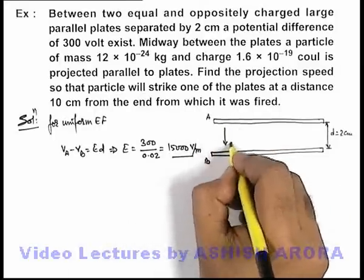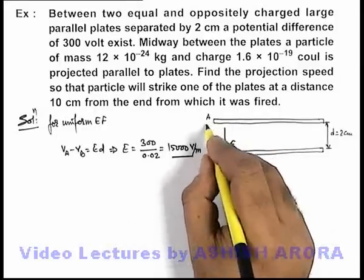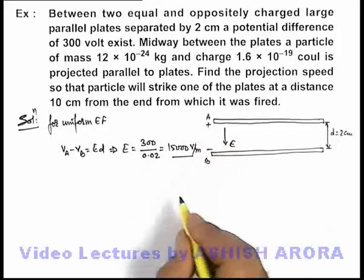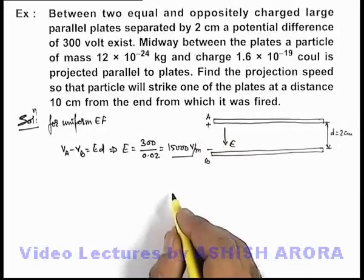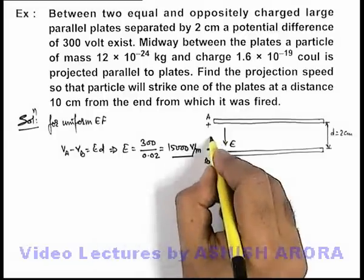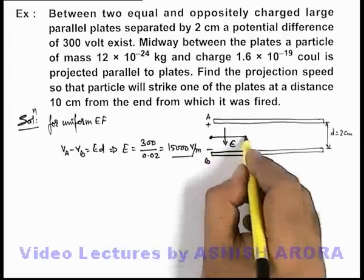From plate A to B, if A is taken at higher potential, that means it is positively charged and B is negatively charged. Now in this situation, if exactly midway between the two plates a particle